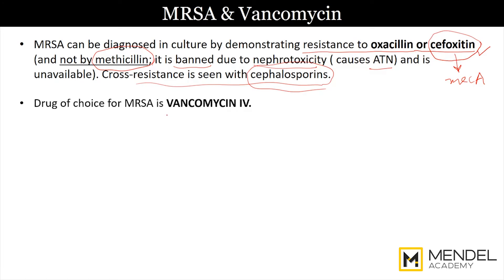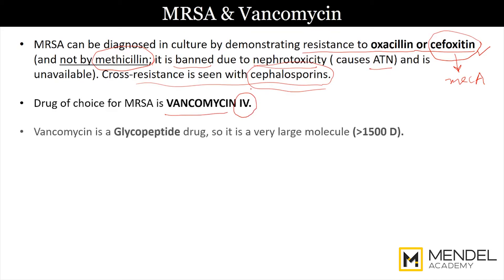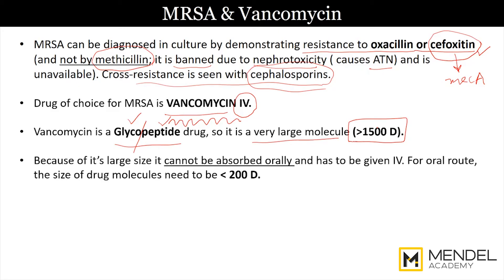The drug of choice for MRSA is vancomycin, administered intravenously. Vancomycin is a glycopeptide drug — a combination of a carbohydrate and a peptide chain — making it a very large molecule, more than around 1500 Daltons. Because of its large size, it cannot be absorbed if given orally and therefore must be given intravenously. For a drug to be absorbed orally, its size must be restricted to less than 200 Daltons — vancomycin is almost 8 times larger than that.